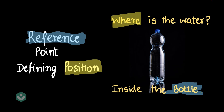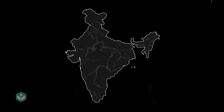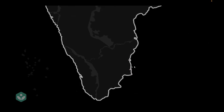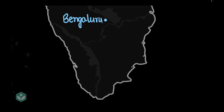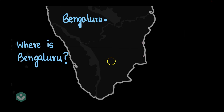The bottle was a reference in the second example; the table was a reference in the first. Those were simple everyday examples. Let's move into something a little more complicated. Here's the map of India, and if we zoom into the southern part, Bengaluru is somewhere there. Now let's say I call two of my friends and ask them, 'Hey, where is Bengaluru?' Since it's a 'where' question, this is a question about position.